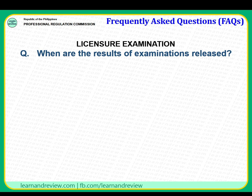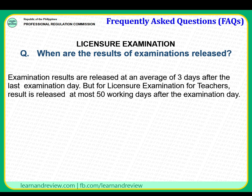When are the results of examinations released? Examination results are released at an average of three days after the last examination day. However, for the Licensure Examination for Teachers, results are released at most 50 working days after the examination day, because many people take the exam. Working days means Monday to Friday — Saturday and Sunday are not included — so that is more or less two months.